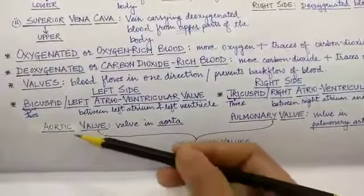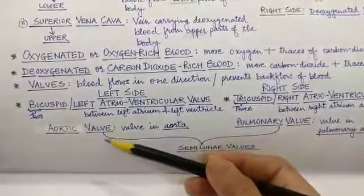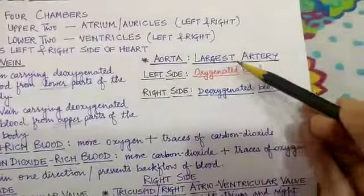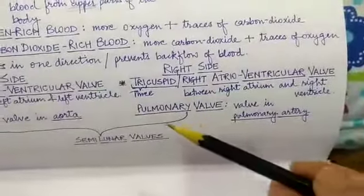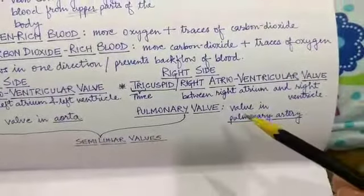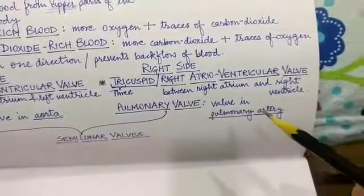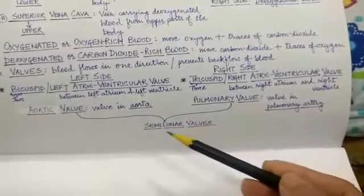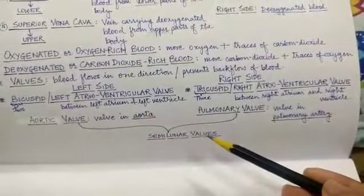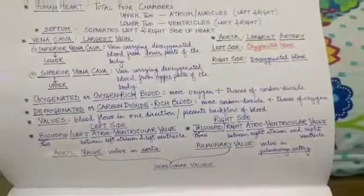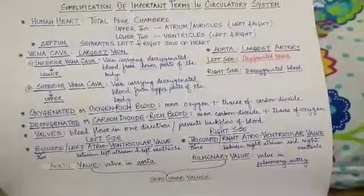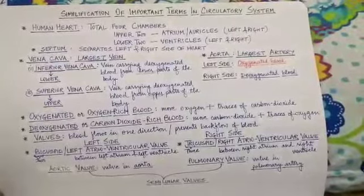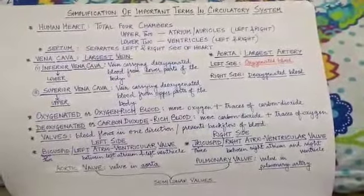Then we also have the aortic valve, which is simply the valve present in the aorta — and the aorta, as we have already discussed, is the largest artery. Similarly, we have the pulmonary valve, which is easy to remember as the valve in the pulmonary artery. Together, the aortic and pulmonary valves are also known as semi-lunar valves. These are the important terms we are going to deal with while discussing the human heart or human circulatory system. I hope I have simplified some of the big, difficult terms so that you can understand them well. Thank you so much.